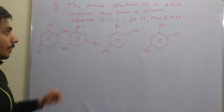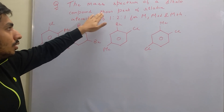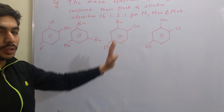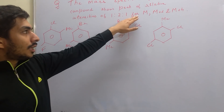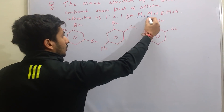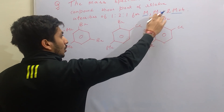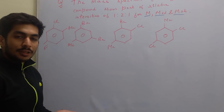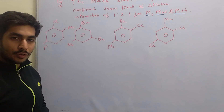The question is that the mass spectrum of a dihalo compound shows peaks of relative intensities of 1:2:1. The intensity of the peaks is given as 1:2:1 and these are the molecular ion peaks of the value M, M+2, and M+4. The higher-than-molecular-ion-peak values are obtained only for isotopes — higher isotopes.